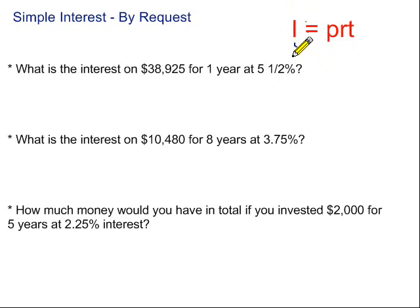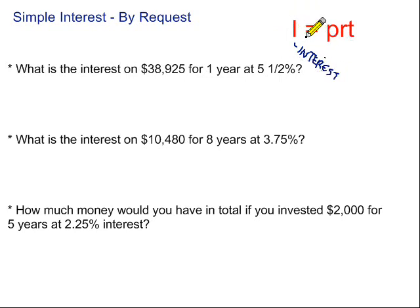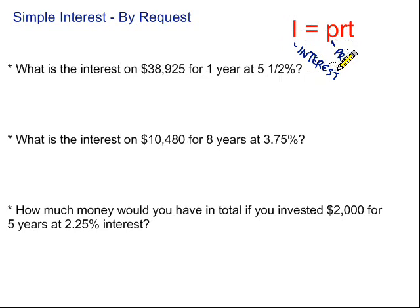I stands for interest — the amount of money that we earn, or the amount of money that we have to pay when dealing with the bank. That's the amount of interest earned. P stands for principal, in other words, the amount that's invested or the amount that we borrow.